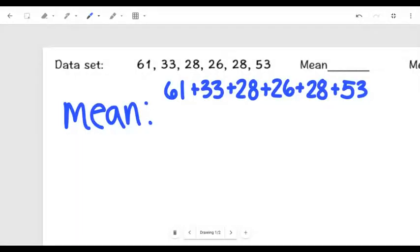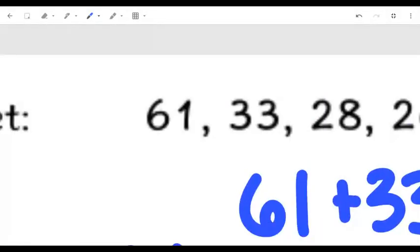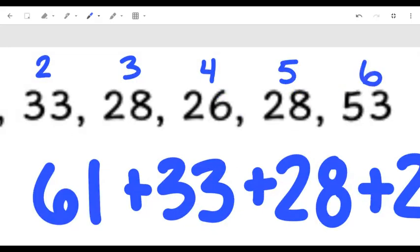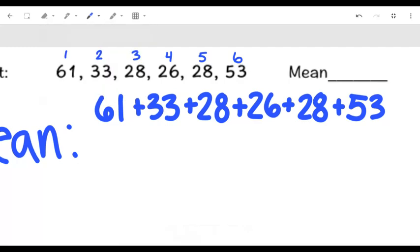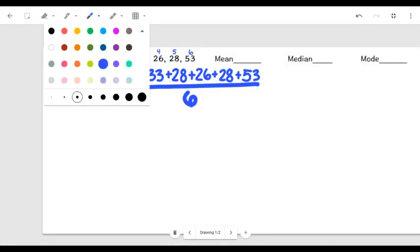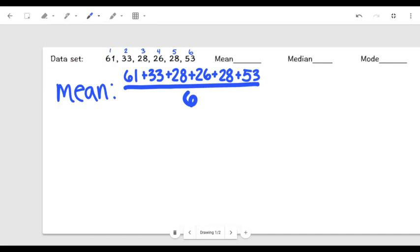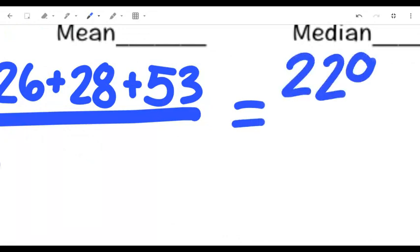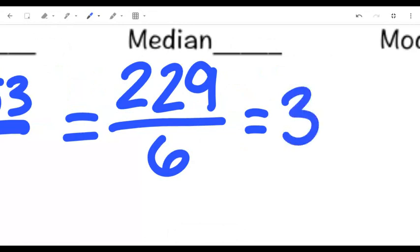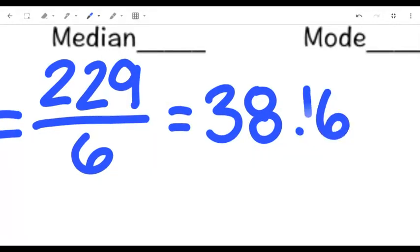And we have to divide by the number of numbers. Let's see how many numbers do we have. We've got 1, 2, 3, 4, 5, and 6. So we are dividing all of this by 6. Take this, put a big line right here, divide by 6. My mean in this instance is going to be, give me a moment for calculation. That's the calculator in my head working. And we have 61 plus 33 plus 28 plus 26 plus 28 plus 53 equals 229.